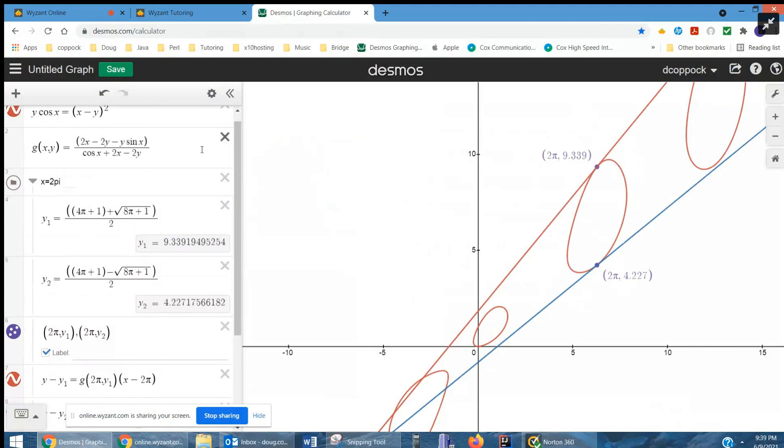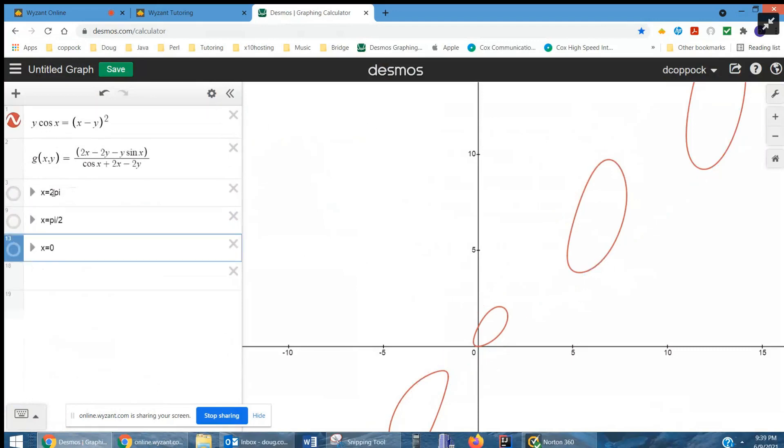So indeed, it looks like this g of x comma y is a formula for the first derivative. And if I want to find the equation of the tangent line as x equals π over 2.